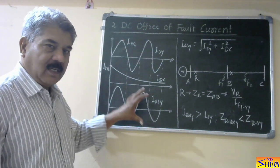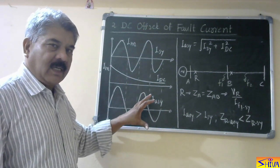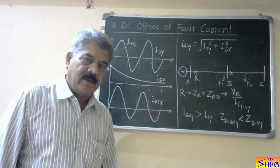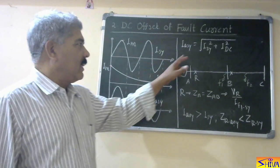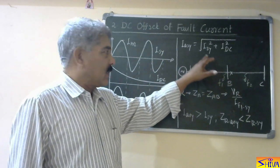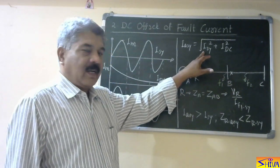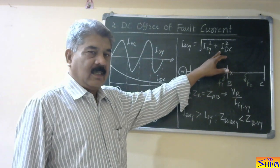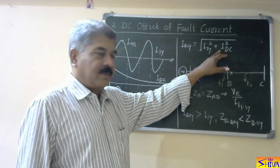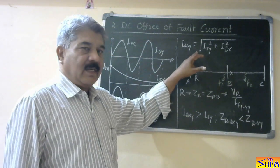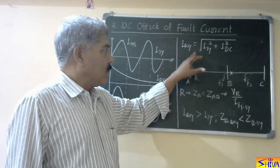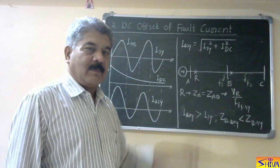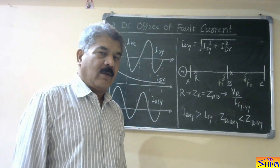The overall magnitude of this asymmetrical fault current is greater than that of the symmetrical fault current alone. It is obtained by the equation: square root of (symmetrical fault current squared plus DC offset squared). Here, the asymmetrical fault current magnitude is more than the symmetrical component of the fault current.